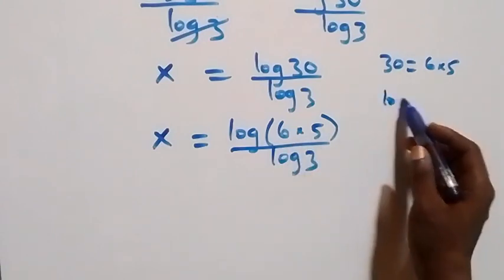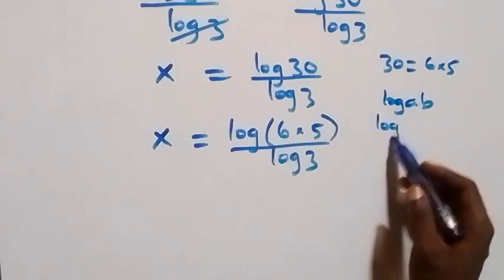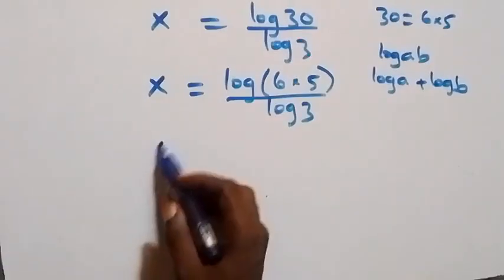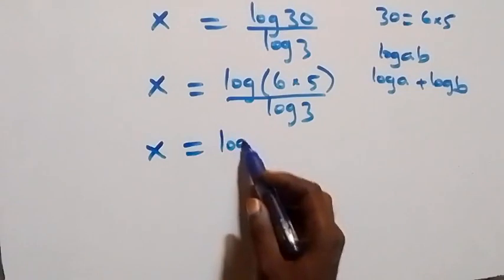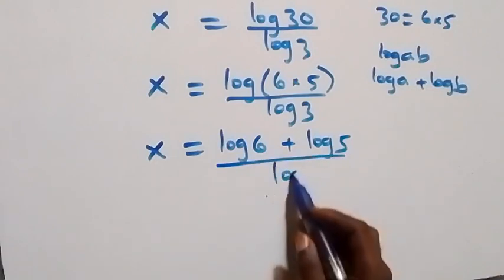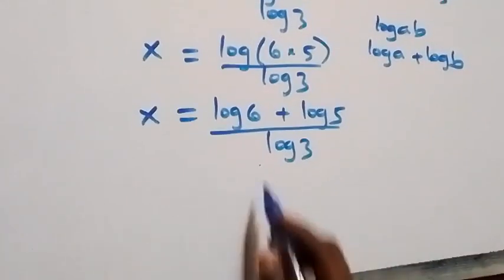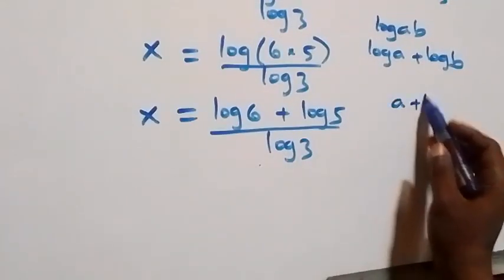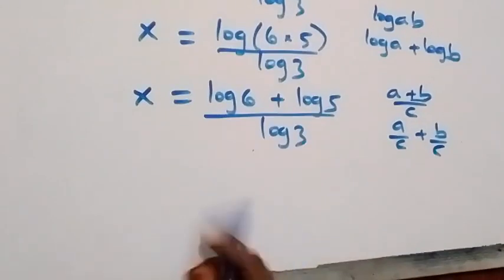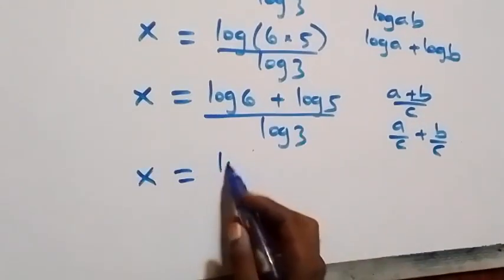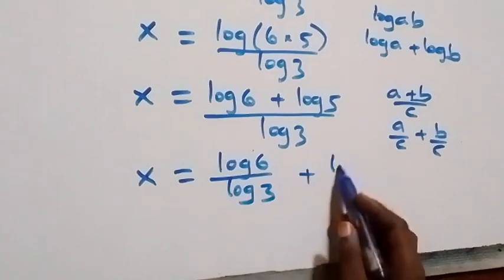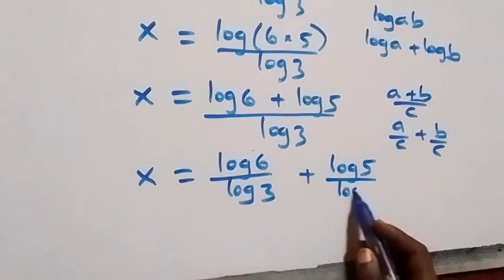From here, when we have log(a times b) it is the same as log a plus log b. So we have x equals log 6 plus log 5, then over log 3. We separate this into two fractions, giving x equals log 6 over log 3 plus log 5 over log 3.